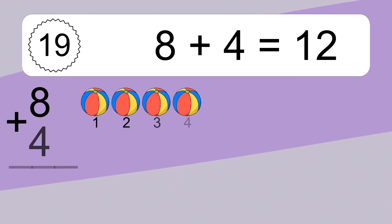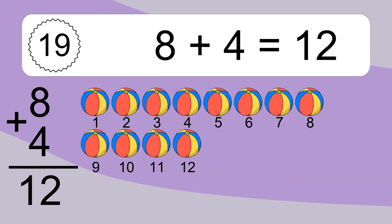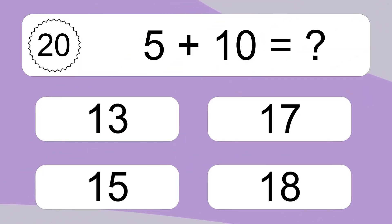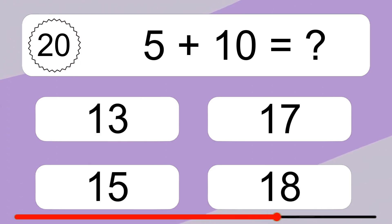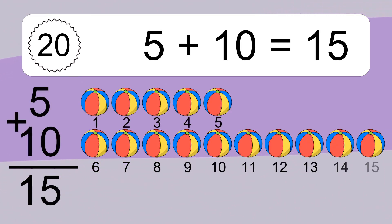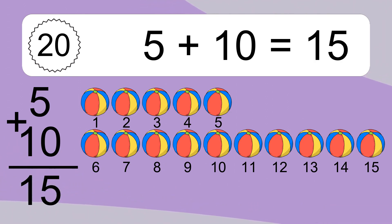8 plus 4 equals what? 8 plus 4 equals 12. Let's count it: 1, 2, 3, 4, 5, 6, 7, 8, 9, 10, 11, 12. 5 plus 10 equals what? 5 plus 10 equals 15. Let's count it: 1, 2, 3, 4, 5, 6, 7, 8, 9, 10, 11, 12, 13, 14, 15.